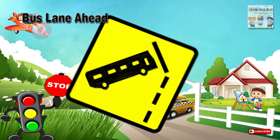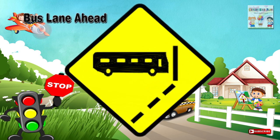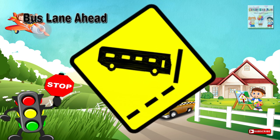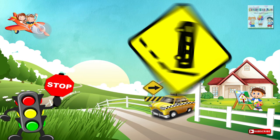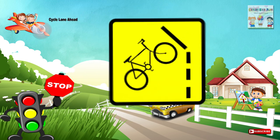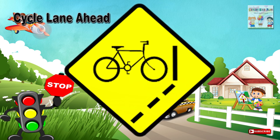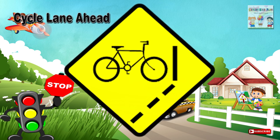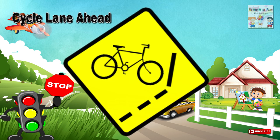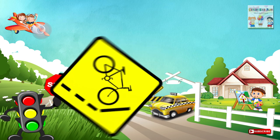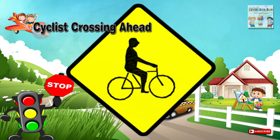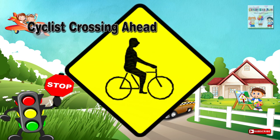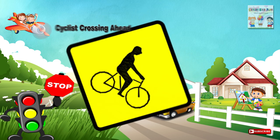Thirty-eight: Bus lane ahead — a place on a road ahead where a lane is reserved for the use of buses. Thirty-nine: Cycle lane ahead — a place on a road ahead where a lane is reserved for the use of bicycles. Forty: Cyclists crossing ahead — a place ahead where cyclists enter or cross the road.